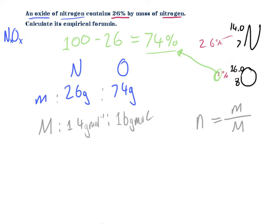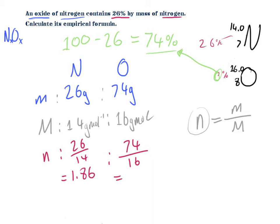Now I'll figure out the number of moles. From the equation: number of moles equals mass divided by molar mass. For nitrogen: 26 divided by 14 equals 1.86 moles (to three significant figures). For oxygen: 74 divided by 16 equals 4.63 moles (to three significant figures).